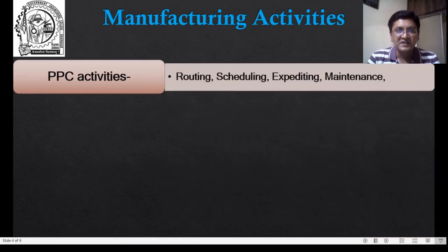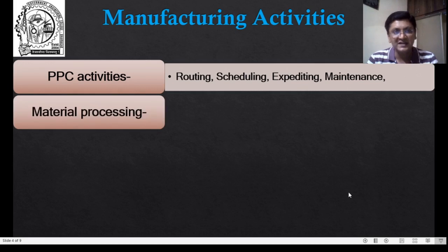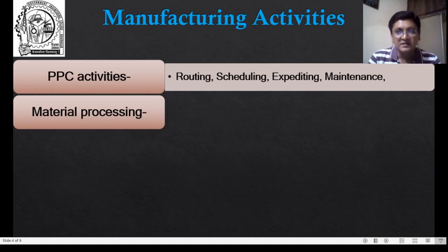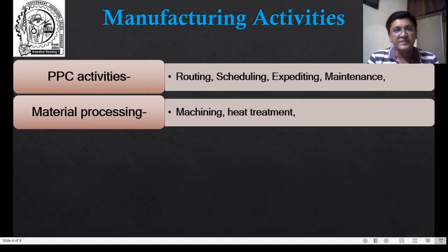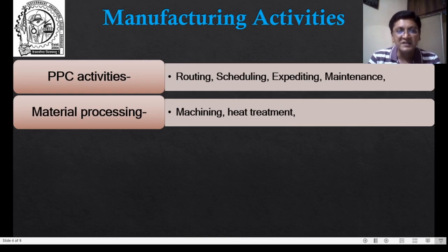Sub-activities in PPC include Routing, Scheduling, Expediting, etc. The second category of manufacturing activities is Material Processing — various processes like Machining, Casting, Forming, Heat Treatment, and Assembly are Material Processing activities.